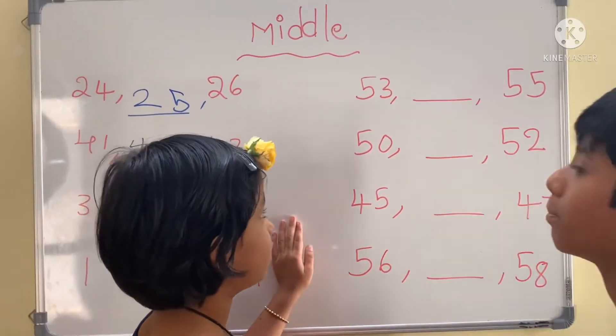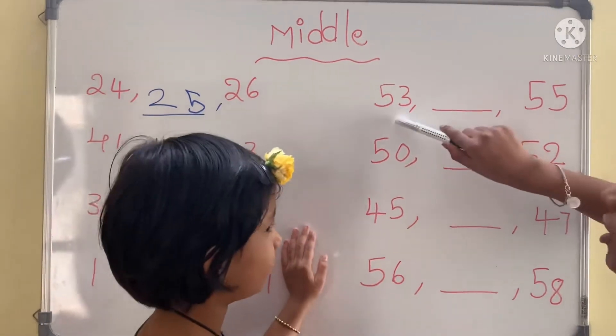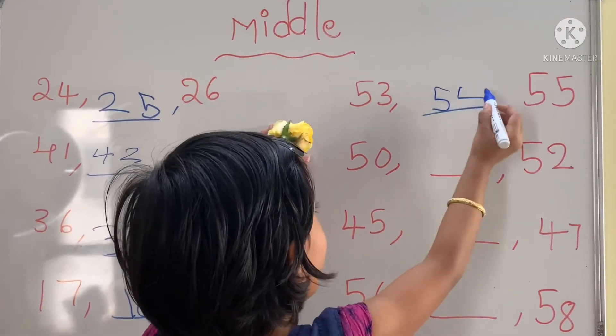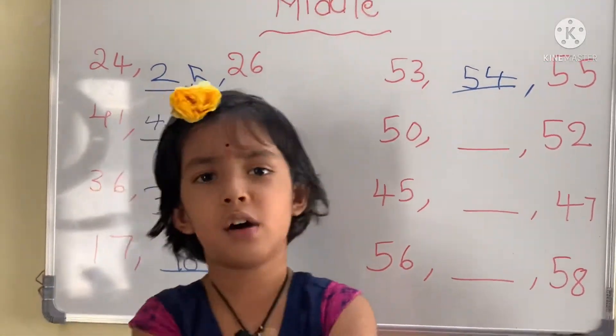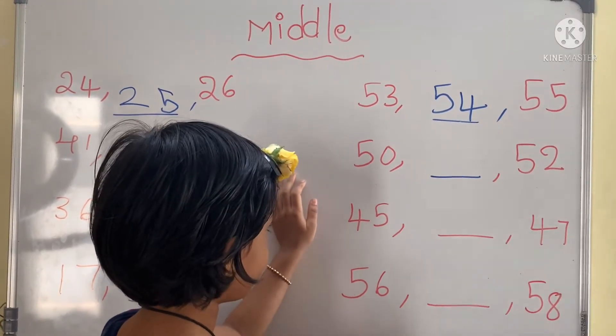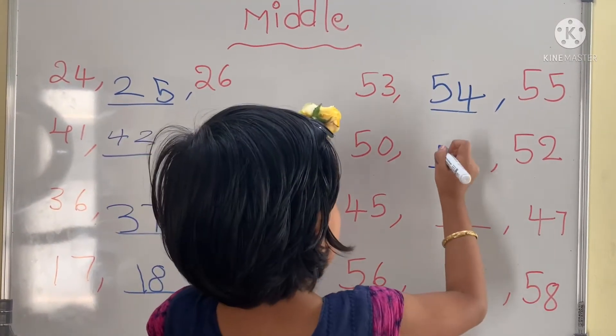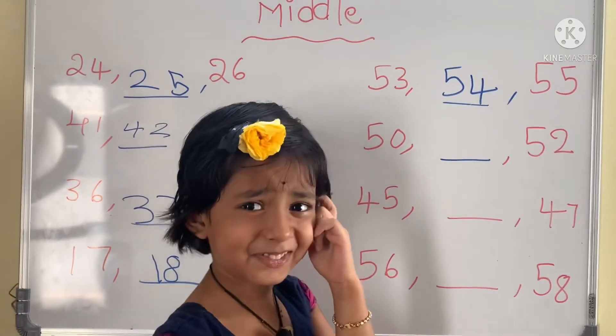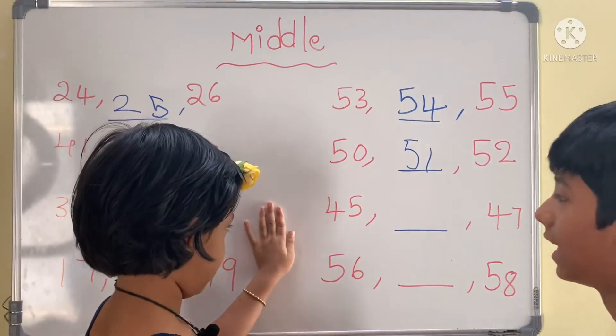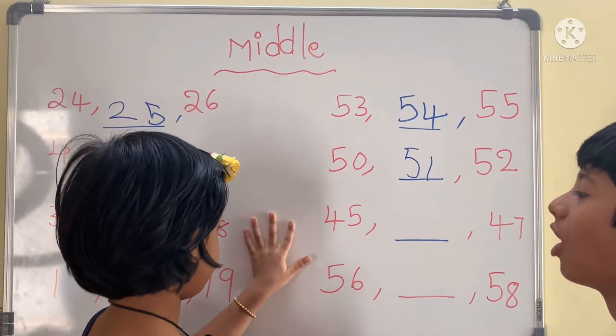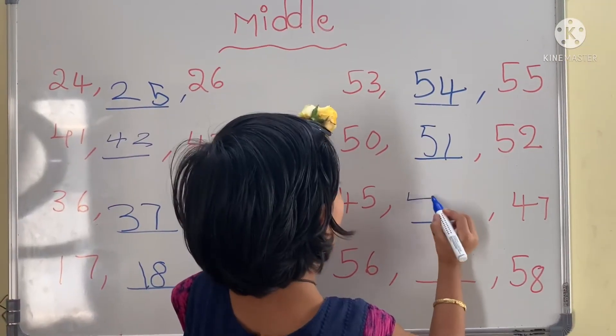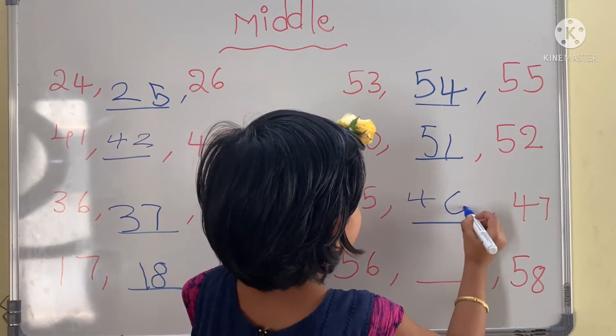What number is in the middle of 53 and 55? 54. What number is in the middle of 50 and 52? 51. What number is in the middle of 56 and 58? 57.